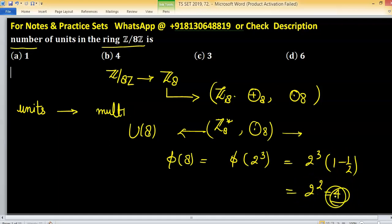So there are 4 elements having multiplicative inverse. Option B is right.